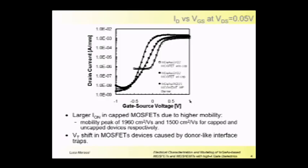I'm talking about the MOSFET devices. When looking at the device with cap, it has a threshold voltage lower than expected with respect to the device with no cap. This unexpected phenomenon is due to the presence of both the capping layer and donor traps at the interface.